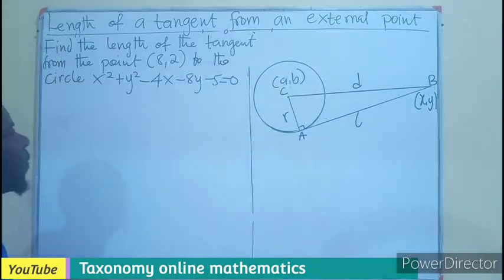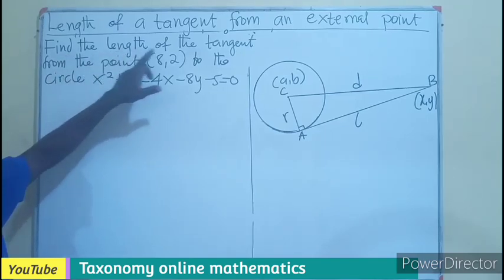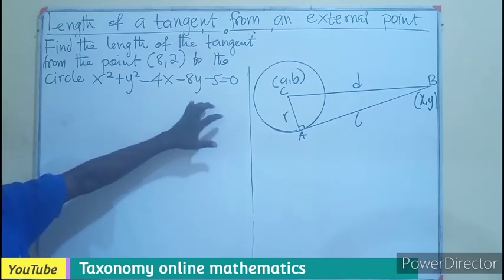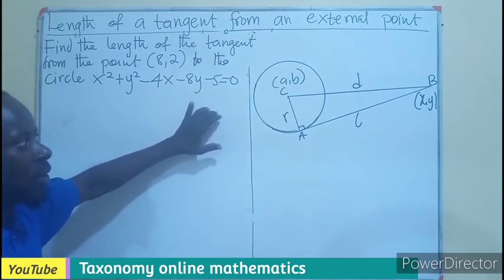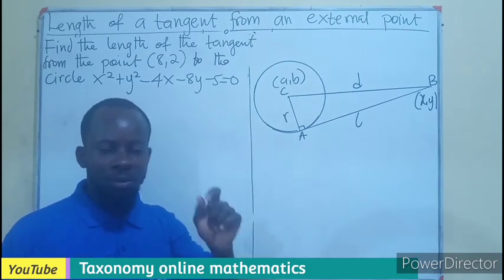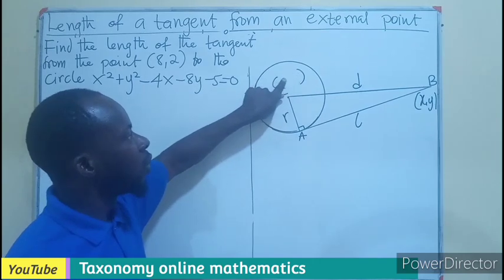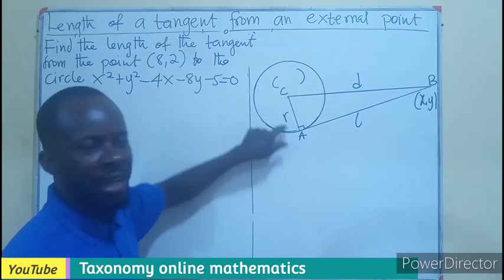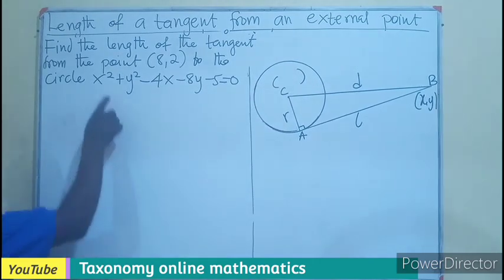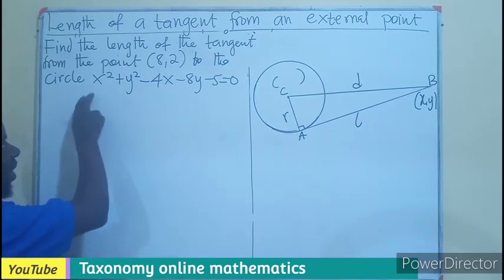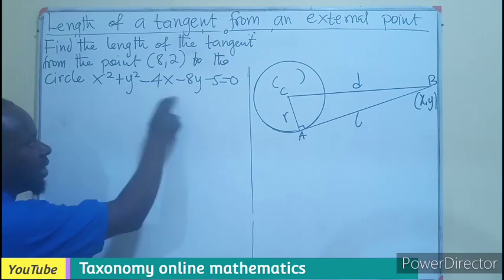Find the length of the tangent from the point (8,2) to the circle which has this equation. Don't forget, with our method or the steps we talked about, we need the center and we also need the radius. So let's go ahead and find the center from here. In our previous episode, we learned how to find the center using the completing the square method.